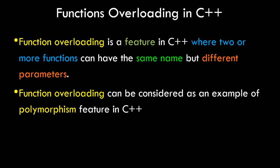So what does function overloading mean in C++? Function overloading is a feature in C++ where two or more functions can have the same name but different parameters — the values passed in the round braces of the function prototype or signature. Function overloading can also be considered an example of polymorphism, which is a feature of C++ that we'll discuss in detail in further tutorials.